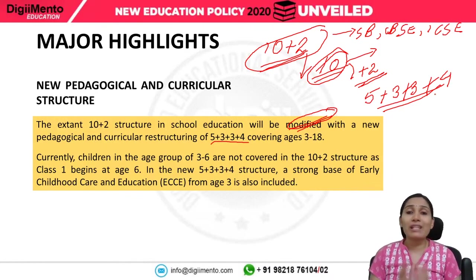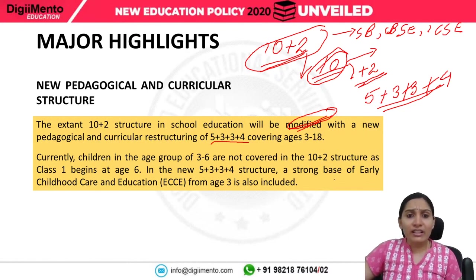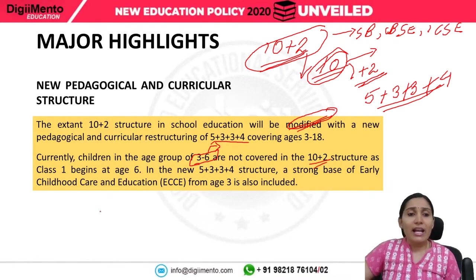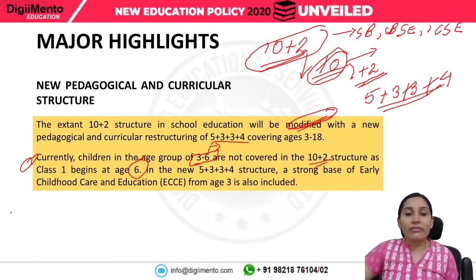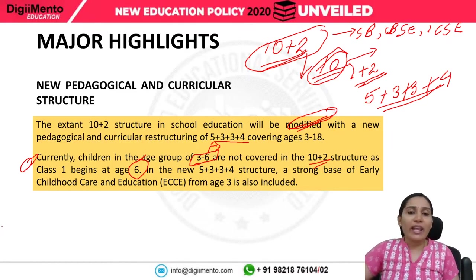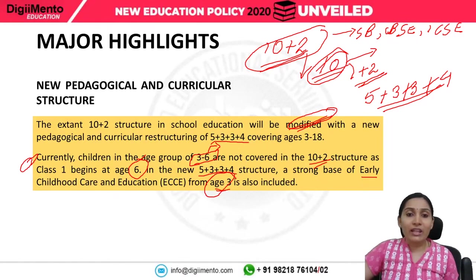Currently, children in the age group of 3 to 6 years — those attending kindergartens or play schools — are not covered in the 10+2 structure, since Class 1 begins at age 6. One major change in the new policy is that children between ages 3 to 6 were not considered part of the formal education system. In the new 5+3+3+4 structure, a strong base of Early Childhood Care and Education (ECCE) from age 3 is included.